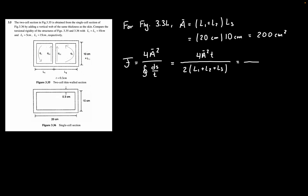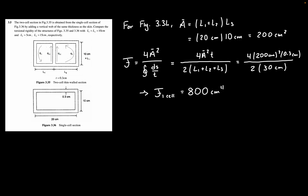Plugging in values: A-bar is 200 cm², so we have 4 times 200 cm², thickness is 0.3 cm, and the perimeter is 2 times 30 cm since L1, L2, and L3 are all 10 cm. This gives J1 of about 800 cm to the fourth.